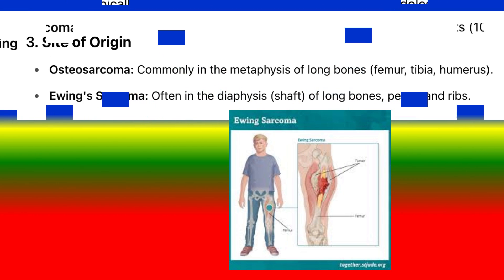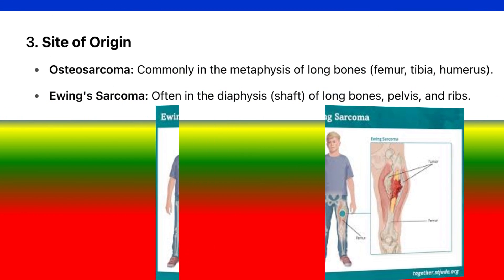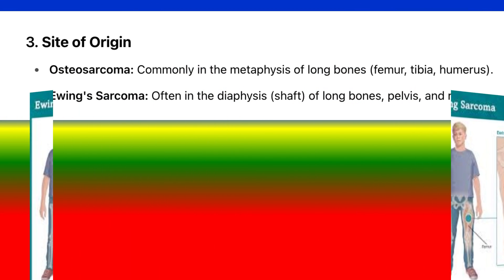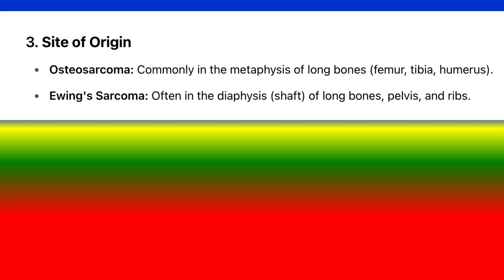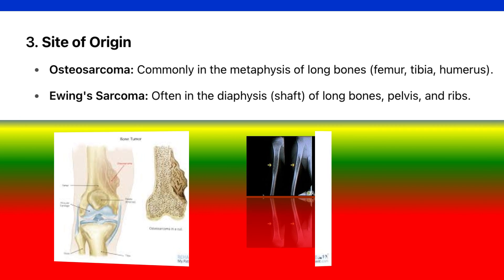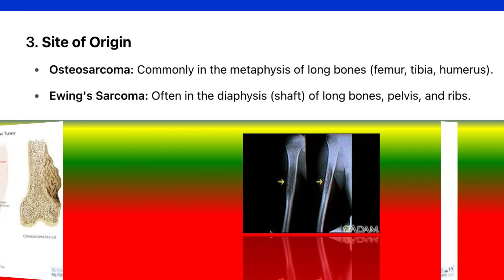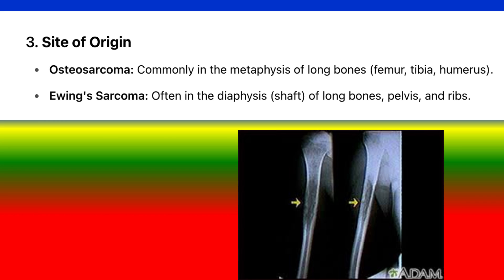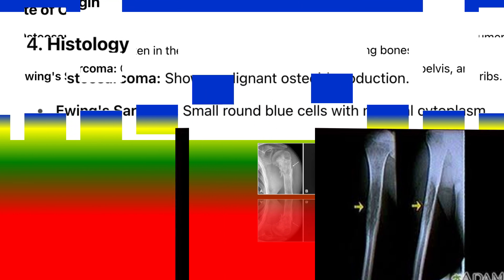3. Site of origin. Osteosarcoma: commonly in the metaphysis of long bones — femur, tibia, humerus. Ewing's sarcoma: often in the diaphysis (shaft) of long bones, pelvis, and ribs.